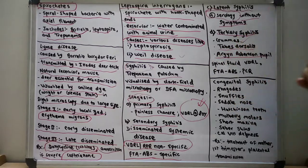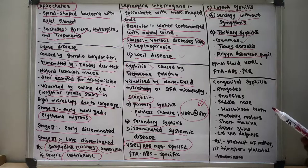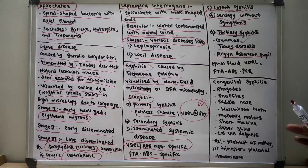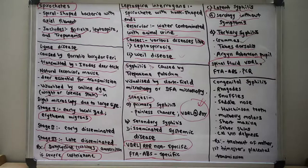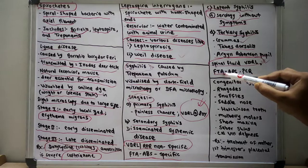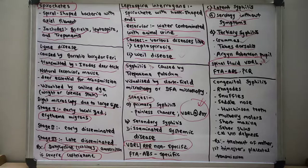The Argyll Robertson pupil in tertiary syphilis is known as the 'prostitute's pupil' since it accommodates but does not react. Various signs include broad-based ataxia, positive Romberg's sign, Charcot joint, and stroke without hypertension. For neurosyphilis diagnosis, spinal fluid is sampled and VDRL test of the CSF is performed. Fluorescent treponemal antibody test and polymerase chain reaction can also be done.